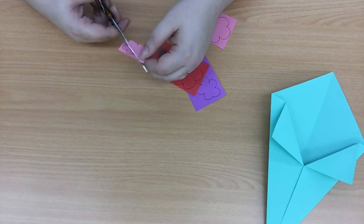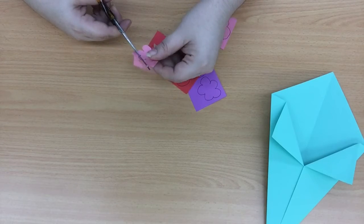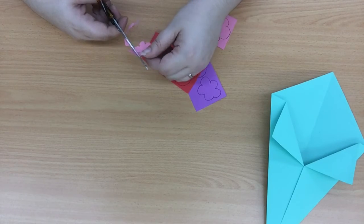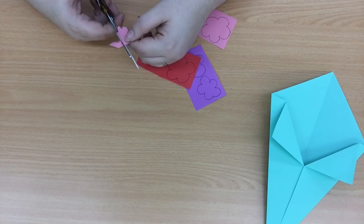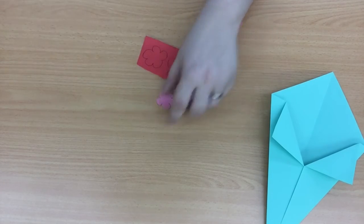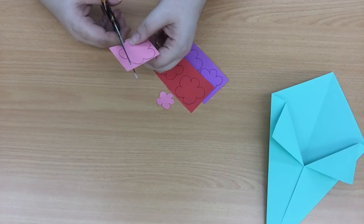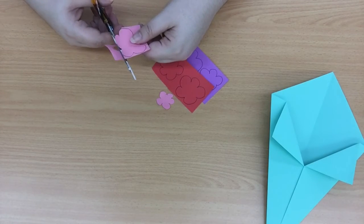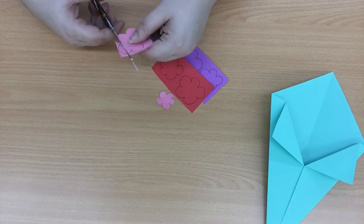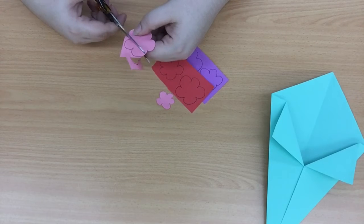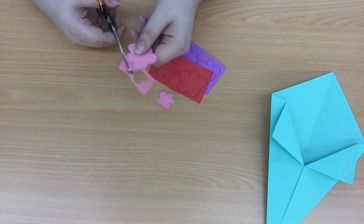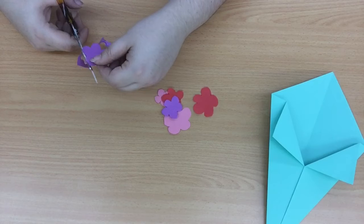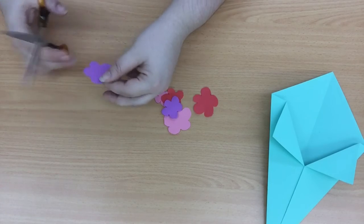Continue this process until all your flowers have been cut out. Remembering to be careful because scissors are sharp. Now all our flowers are cut out. It's time to make the centers.